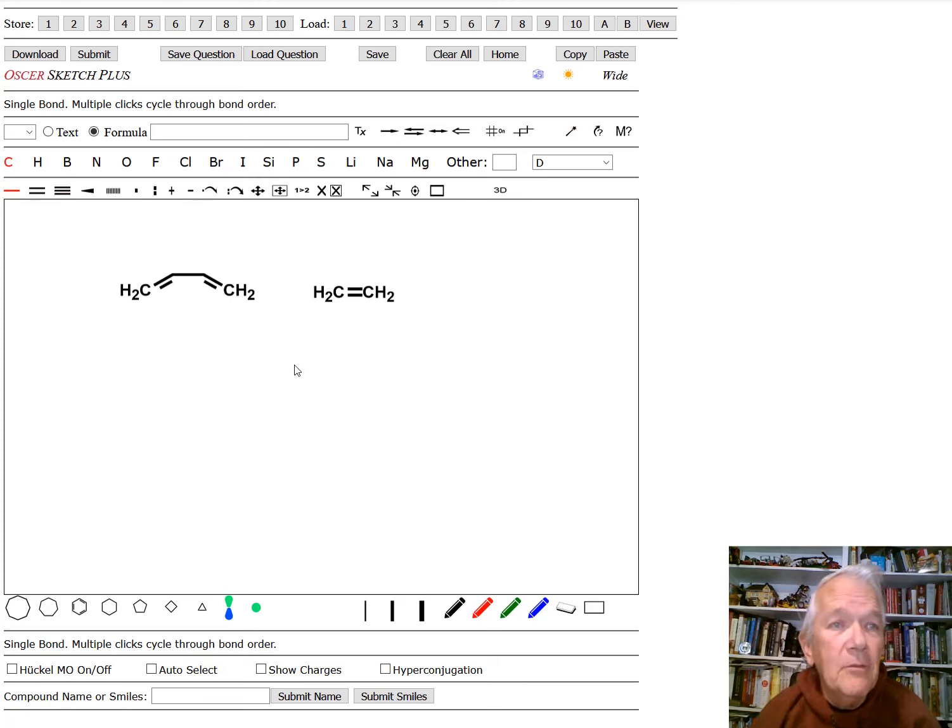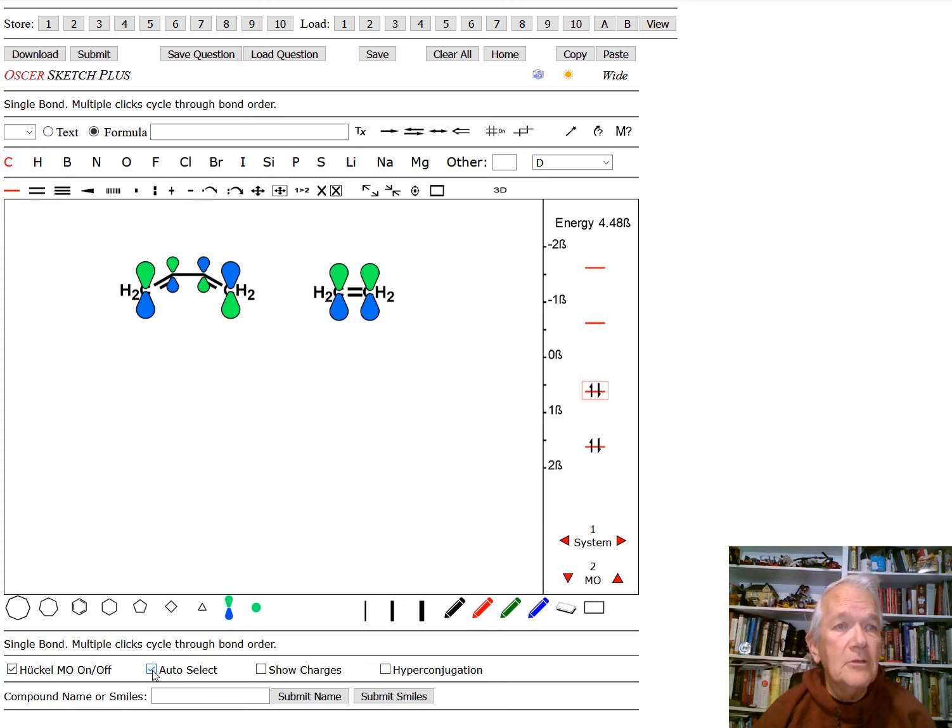So we'll start out here by looking at some molecular orbitals. Oscar can calculate the pi molecular orbitals of a system by turning on the Huckel-MO calculation down here at the bottom. What automatically comes up is the highest occupied molecular orbital of each molecule. Butadiene here is first at system 1, and ethylene over here is the second molecule at system 2.